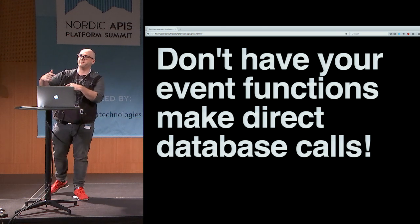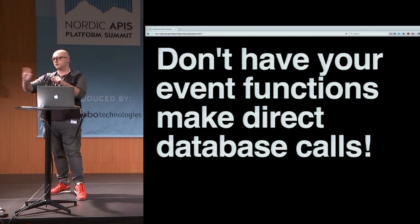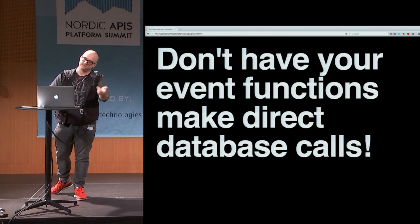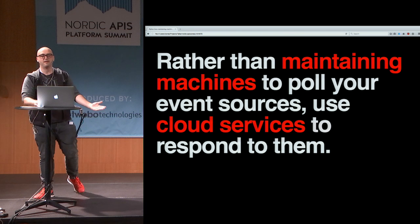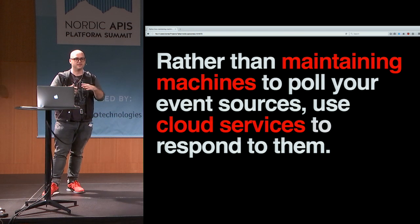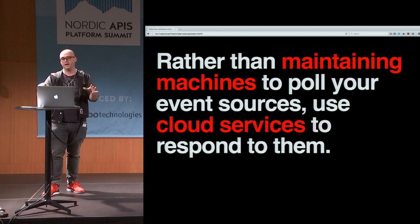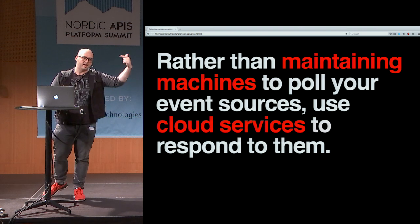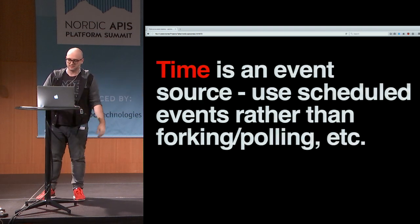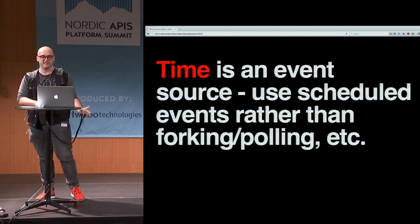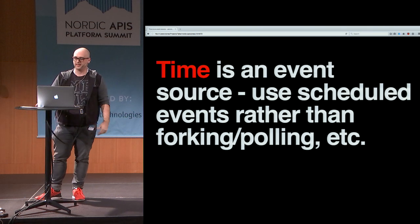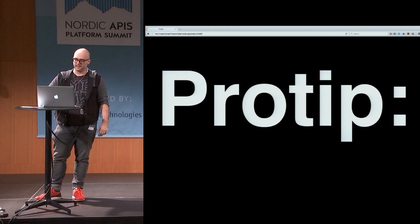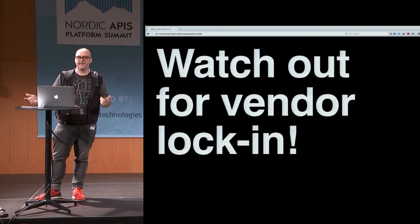If you're using database activity as an event trigger, just make sure that your API is still the primary source of truth in your application. I see people who have an API but inside their event functions still make SQL or ORM calls directly — you still probably want to go through your API. Rather than maintaining machines set up permanently to poll your event sources, just set up event triggers to execute in response to them. Time is also an event source, so if you want regularly occurring tasks, you can do that too.